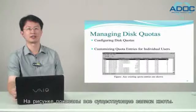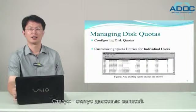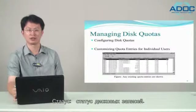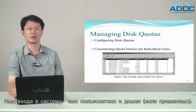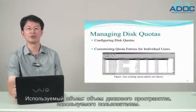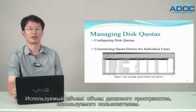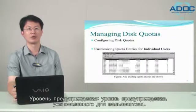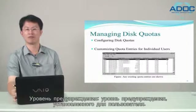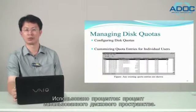If you open quota entries, any existing entries are shown. The entries display the following information: Status — the status of the disk entry; Name — the display name of the user's account; Logon name — the logon name and domain, if applicable; Amount used — the amount of disk space used by the user; Quota limit — the quota limit set for the user; Warning level — the warning level set for the user; and Percent used — the percentage of disk space used toward the limit.